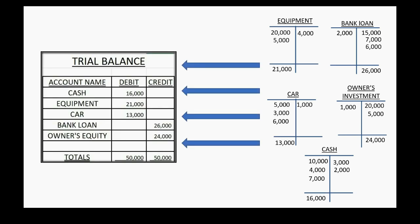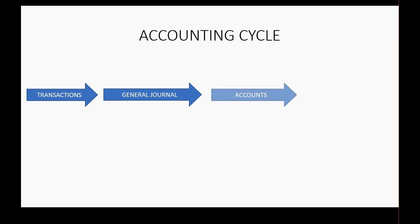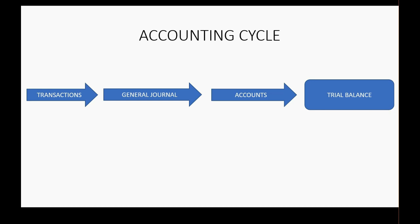After posting correctly, you would foot the T-accounts and take the ending balance of each account into the trial balance. Now you know the full accounting cycle: record transactions in the general journal, post from the journal to T-accounts, foot the T-accounts and put results in the trial balance, then take those numbers and organize them into financial statements so people can understand what's going on with the business.